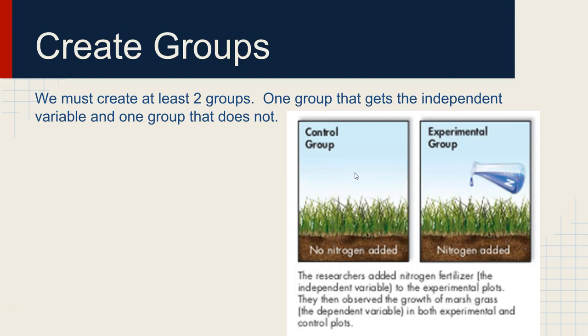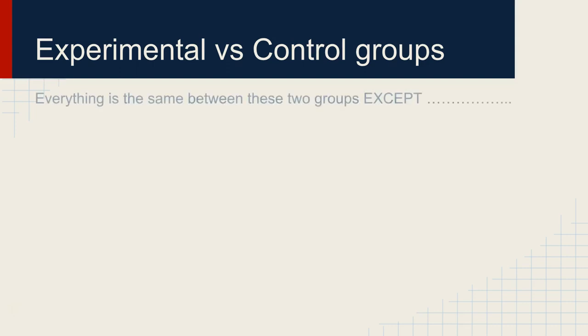So then you're like, well, what do we need the second group for? Why don't we just dump the fertilizer on there and measure the grass? We need the control group to compare it to to see if the fertilizer actually did anything. So the control group is for comparison.